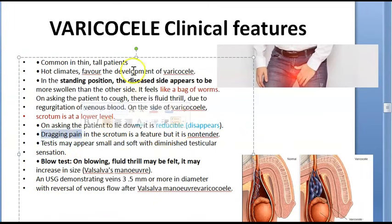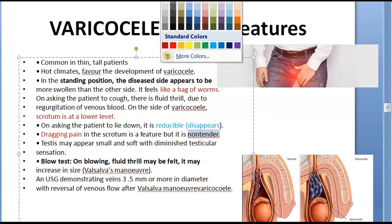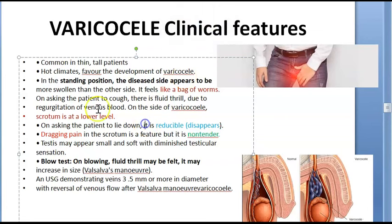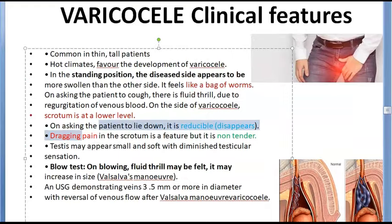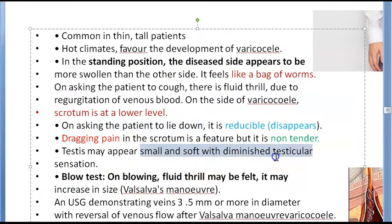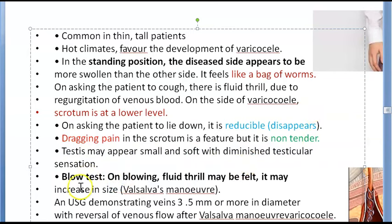There is a dragging pain in the scrotum, but it is non-tender — meaning the patient complains of dragging pain but touching it does not produce acute pain. The testis may appear small and soft with diminished testicular sensation, because what looks big is the dilated veins, not the testis itself.